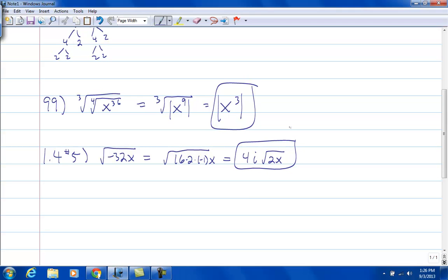And then number 37. We have the square root of negative 9 times the square root of negative 2.